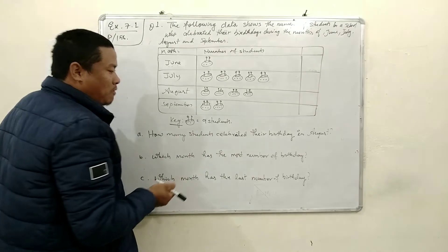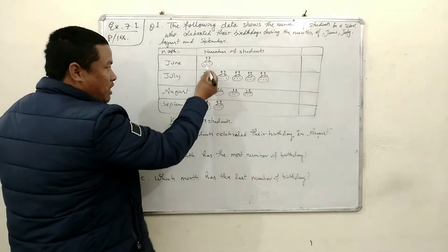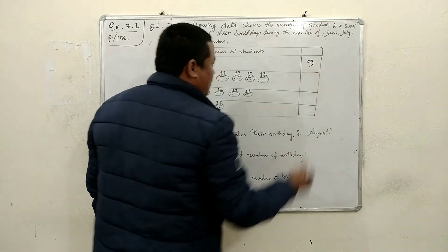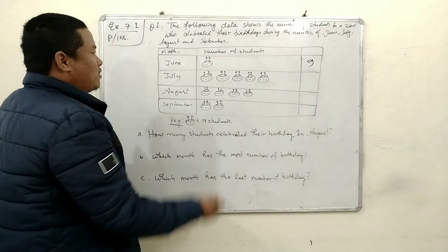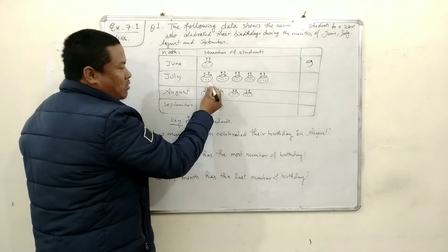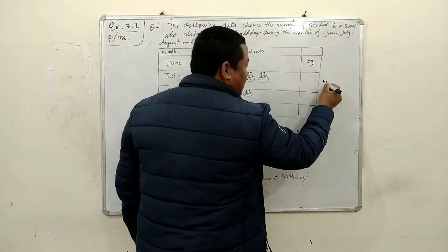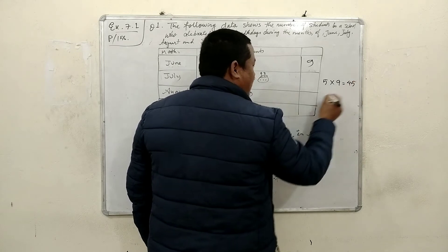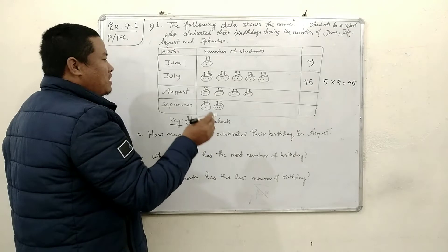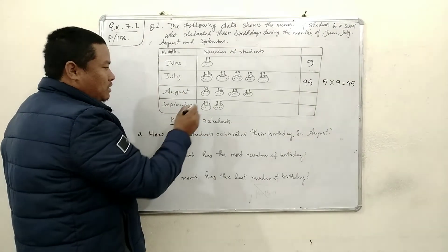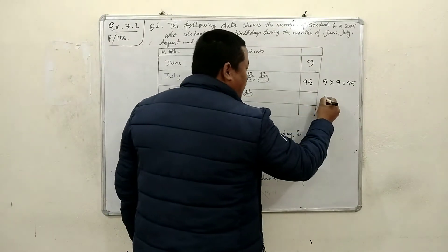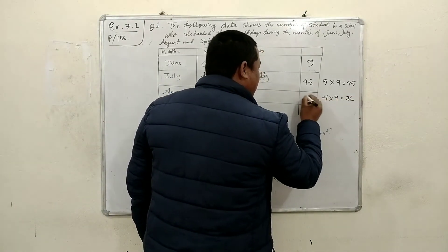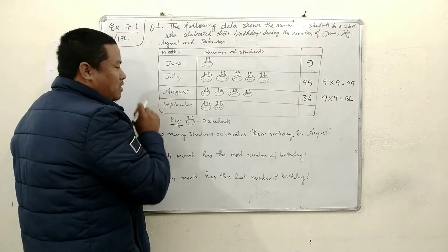First check the key: one picture is equal to 9 students. In June, only one picture is there, so 9 students celebrated their birthday in June. In July, there are 5 pictures — 5 × 9 = 45 students celebrated their birthday in July. In August, there are 4 pictures — 4 × 9 = 36 students celebrated their birthday in August.